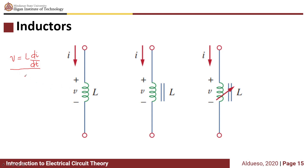This equation shows that when there is no change in current, the rate of change is zero, and the voltage across the inductor is also zero. So meaning, at DC, the inductor is a short circuit.